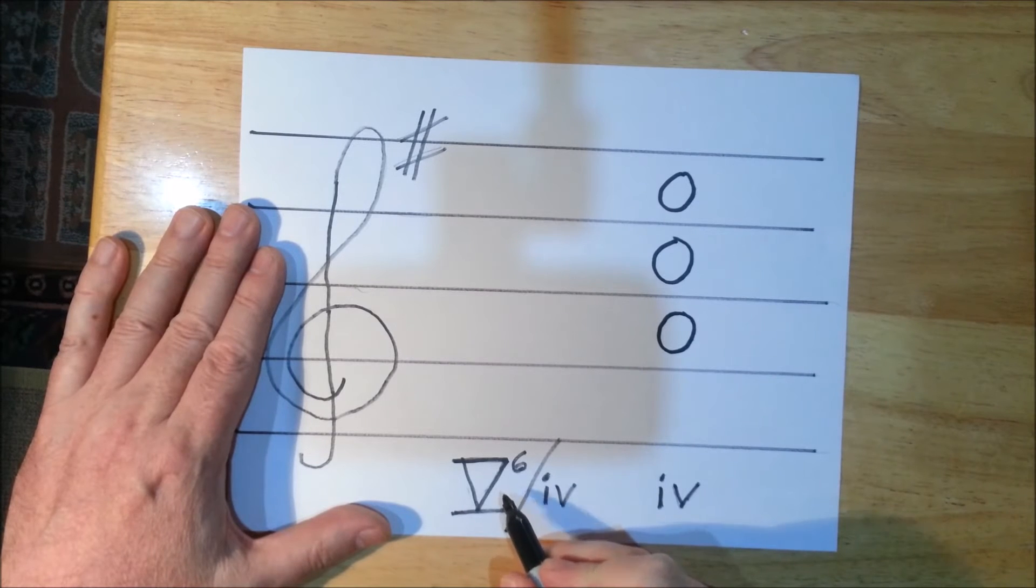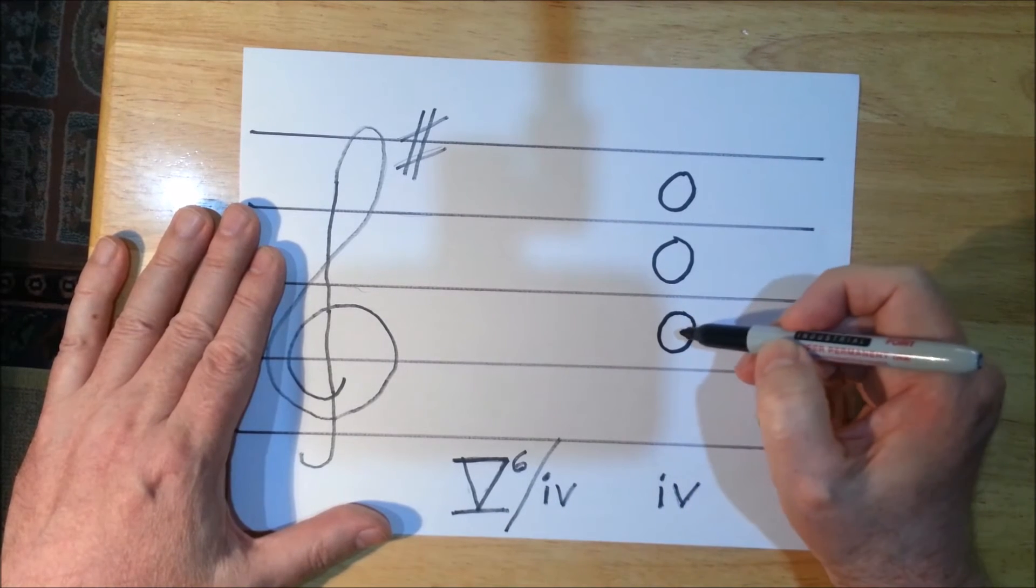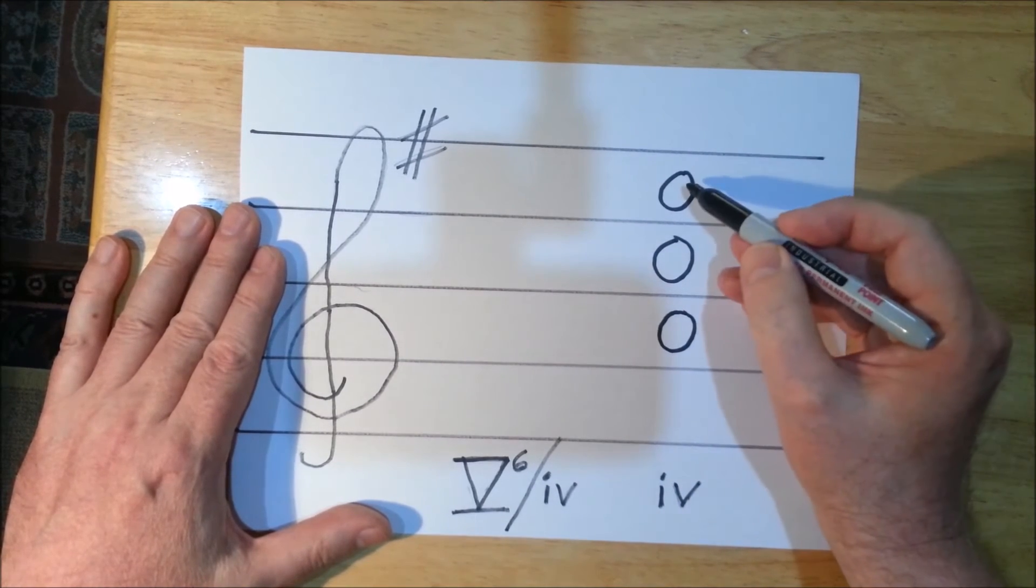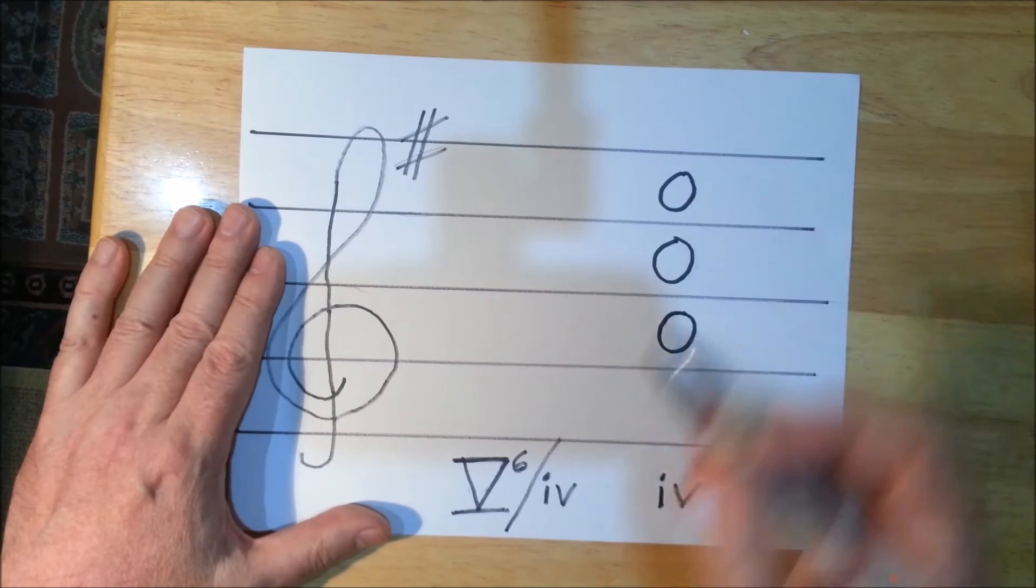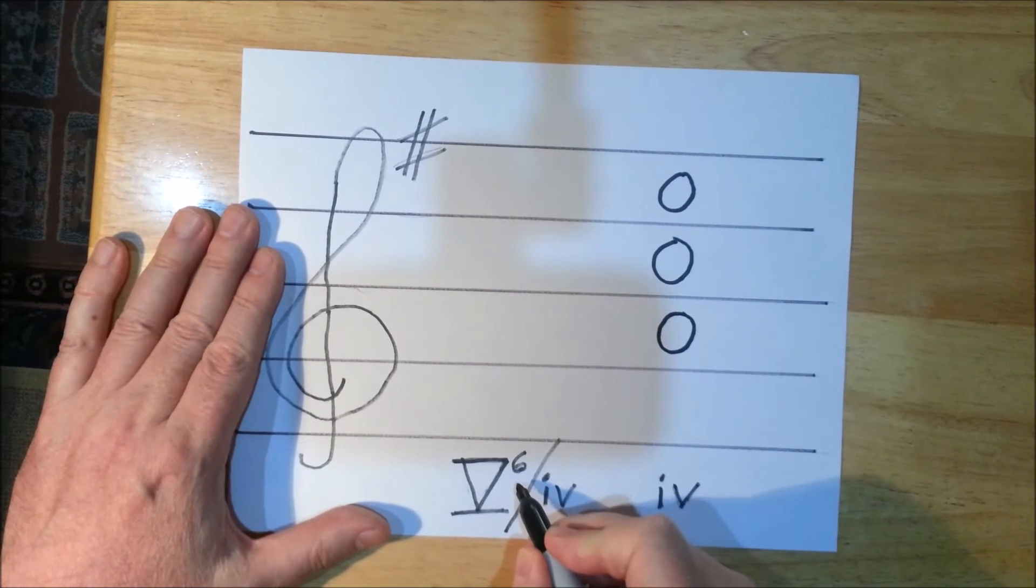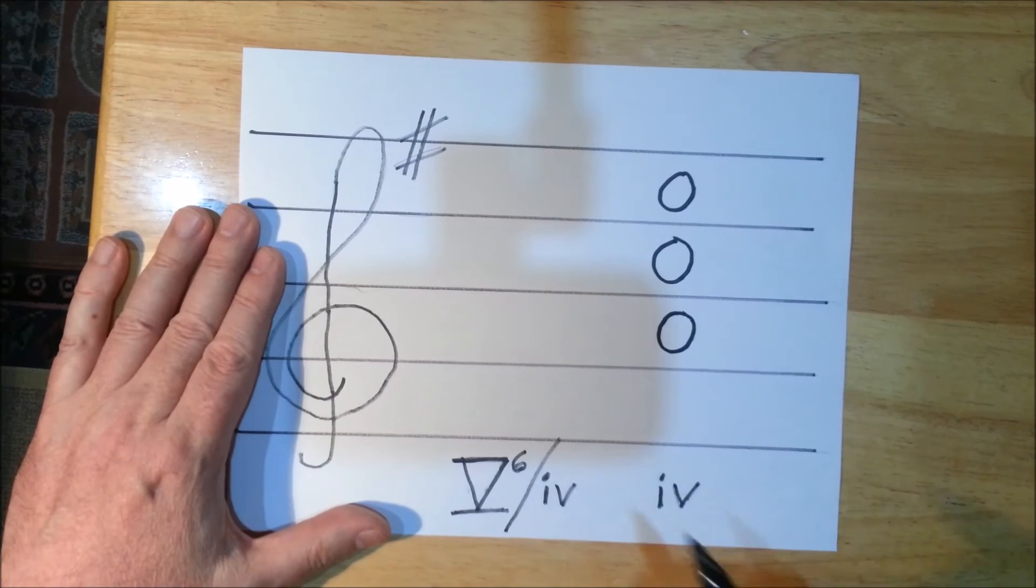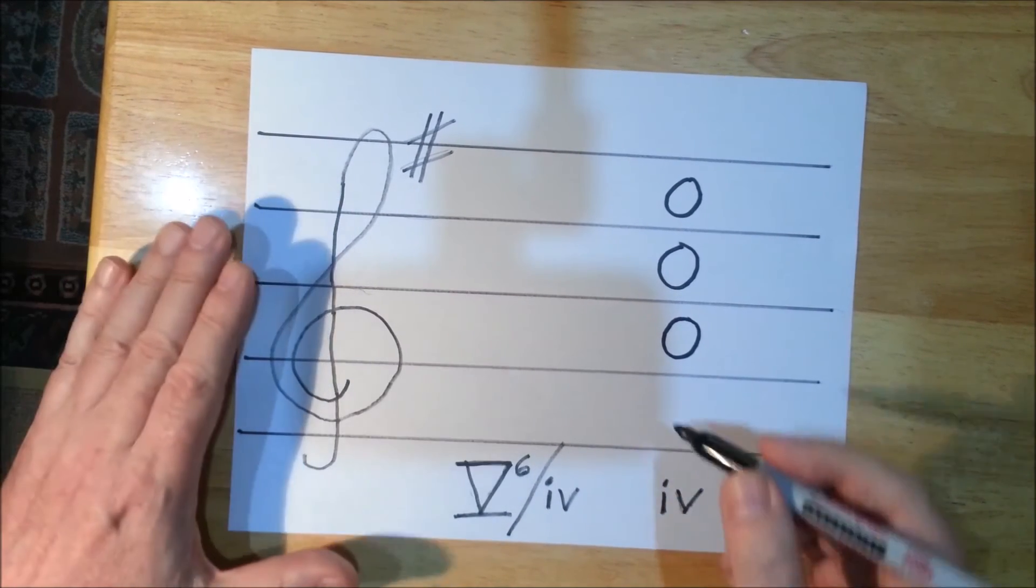So the dominant of A is E. So I'm going to have some sort of an E chord and the six tells me that it's going to be in first inversion. So I'm going to do an E chord in first inversion.